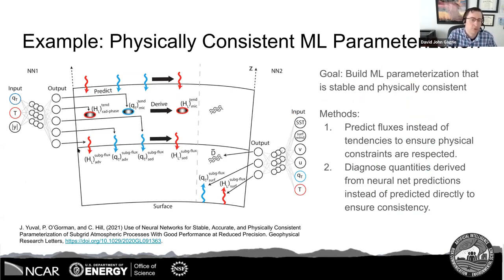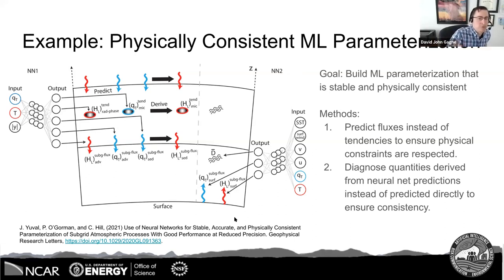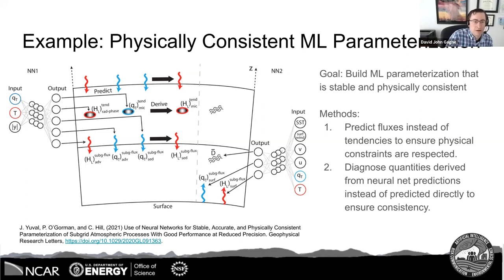Another example from Yuval et al. involved tuning inputs, outputs, and how the whole system connects to make it physically consistent and stable. They predicted fluxes instead of absolute values, and diagnosed certain quantities from what they predict rather than predicting everything directly, ensuring all quantities are consistent with each other. This resulted in a stable model that works with both regular neural networks and random forests.